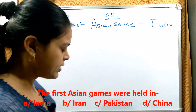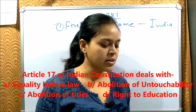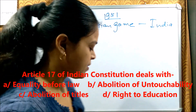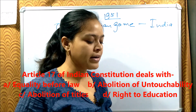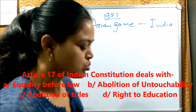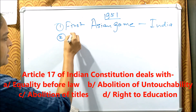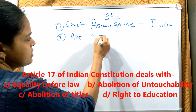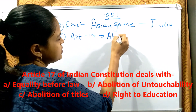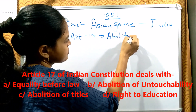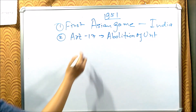Next question: Article 17 of the Indian Constitution — what does it deal with? Option 1 is equality before law. Option 2 is abolition of untouchability. Article 17 deals with the abolition of untouchability.